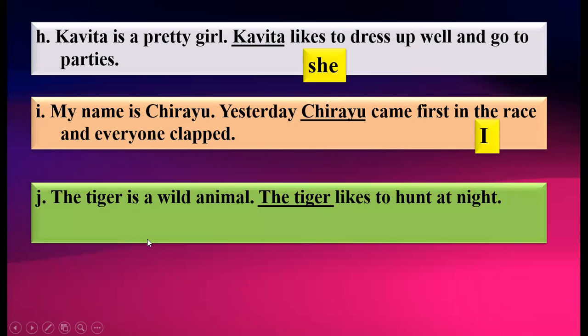The tiger is a wild animal. The tiger likes to hunt at night. Here 'the tiger' is underlined, so we will use 'it'. As I have told you previously, we use 'it' for animals and small babies.